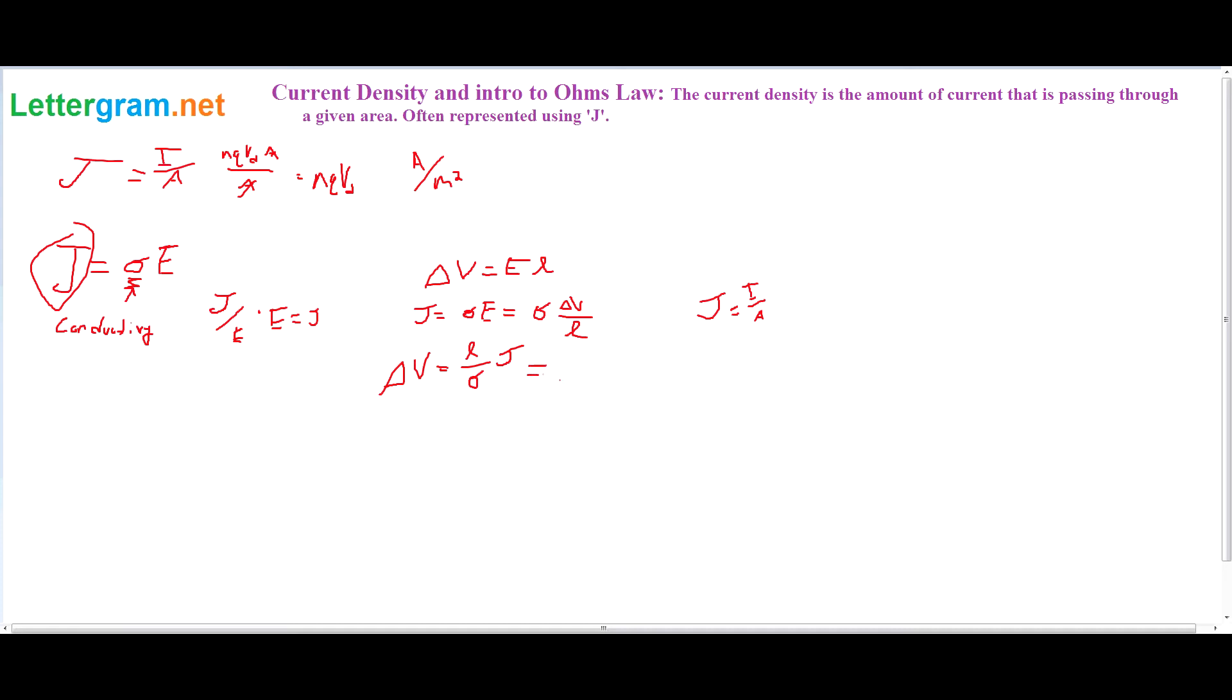And if we take J, and if we do this, the current density is equal to I over A. We get, or can get, that L divided by the conductivity times the area times I.